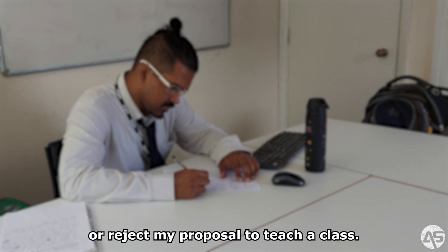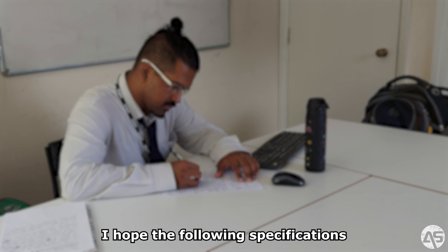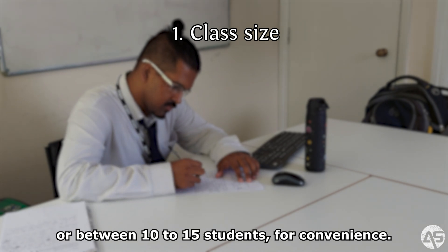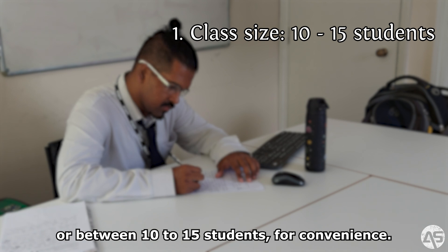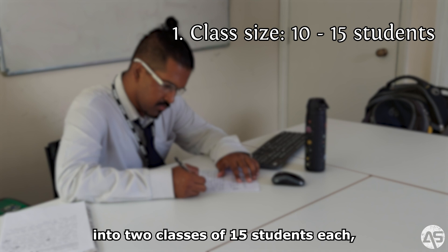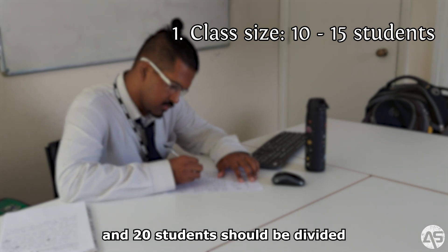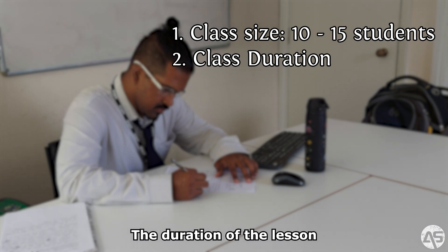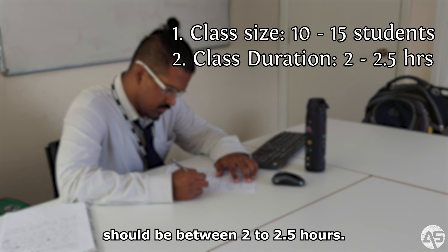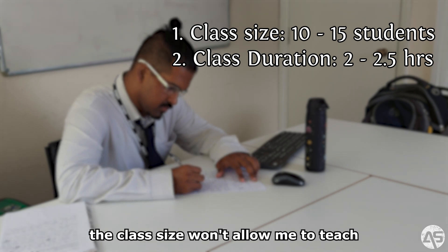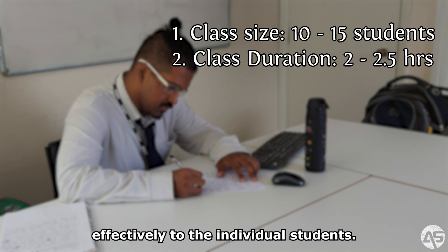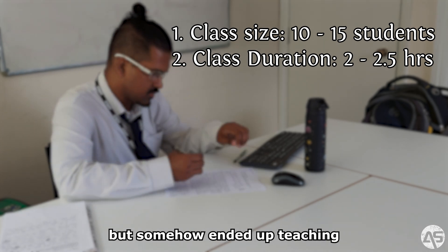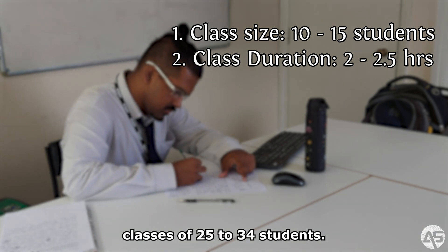I hope the following specifications will be met. One: the class size should ideally be 12, or between 10 to 15 students. For convenience, 30 students should be divided into two classes of 15 students each, and 20 students should be divided into two classes of 10 students each. Two: the duration of the lesson should be between 2 to 2.5 hours. Decreasing the time or increasing the class size won't allow me to teach effectively. I had mentioned this criterion previously when I taught in Assam but somehow ended up teaching classes of 25 to 34 students.